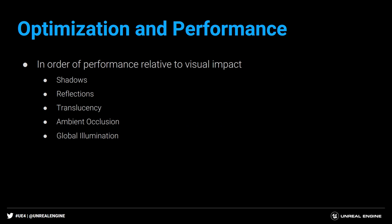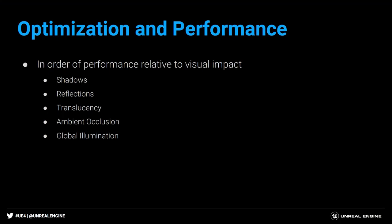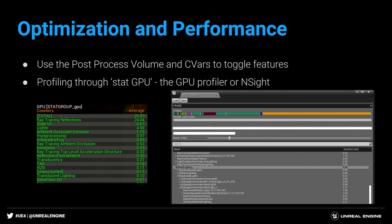Taking a step back to talk about the big picture of optimization priority: shadows are by far the best — relatively cheap and very visible. Reflections are really expensive but also really visible, so they're probably the second thing to move into. Translucency is case-by-case; ambient occlusion is pretty cheap but case-by-case. Global illumination is super cool but super expensive — basically can't use it right now. You use a post-process volume and C vars to control this, and STAT GPU plus the GPU profiler to look into it.